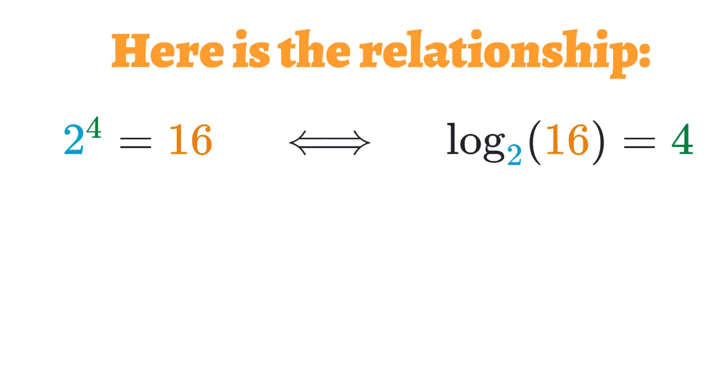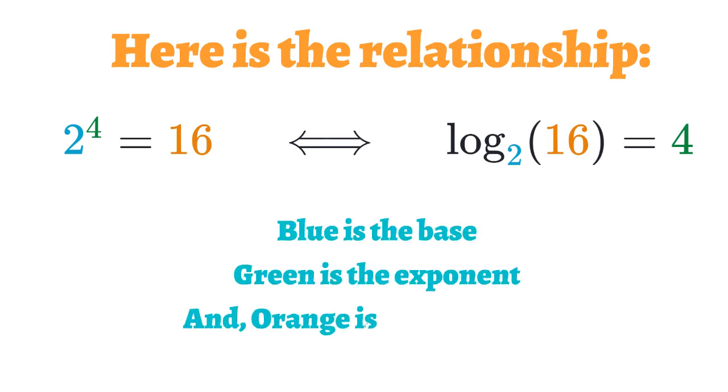And on the right hand side, we have an equivalent logarithmic equation which states log base 2 of 16 is equal to 4. On the logarithmic equation, blue is the base, green color signifies the exponent, and orange is the argument.